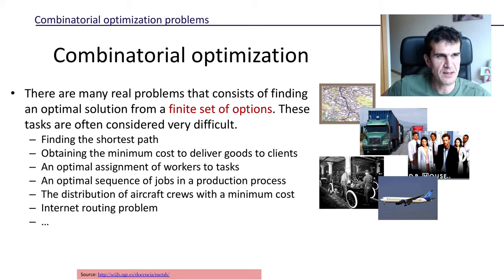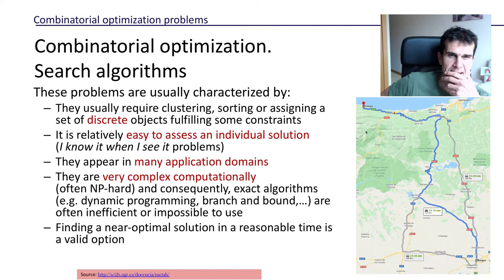Also when you have to find the optimum distribution of aircraft crews—optimum would be with minimum cost—or when you have to find the best path to deliver data packages through the internet. There are many different contexts where combinatorial optimization is very useful.